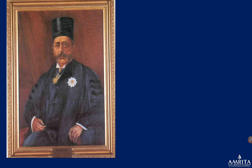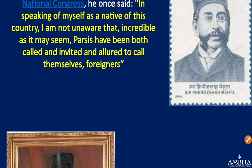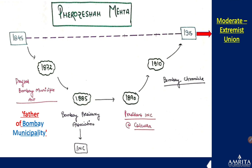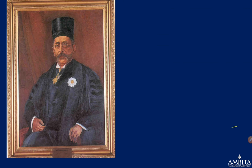His portrait is in the Parliament building, which shows the importance of the role he played in the founding phase of the Indian national movement. Many lanes and places in Bombay are named after Ferozeshah Mehta. These small details matter — if a question comes around him, we will be able to tackle it. That is what we are trying to do with this Impetus Series: give very qualitative material in a short time.